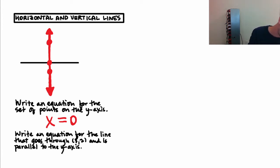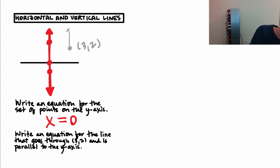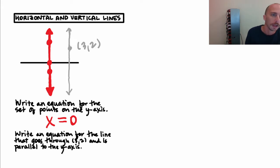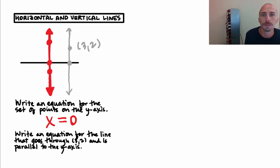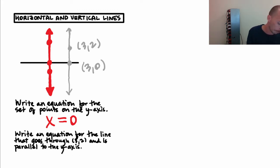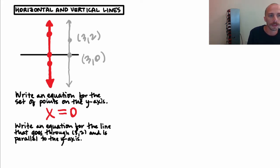Now let's write an equation for the line through the point (3, 2) that's parallel to the y-axis — which is to say, vertical. Drawing that vertical line, I notice that x doesn't shift because the line goes up and down. So I'd also have x equal to 3 and y equal to zero on that line. This is the set of all points where x equals three.